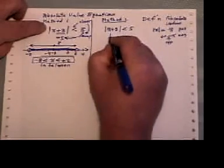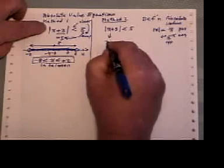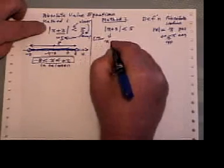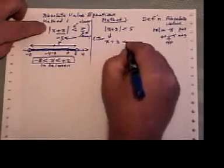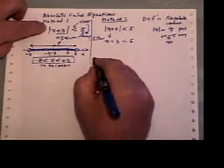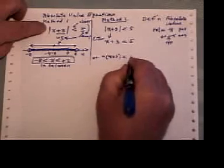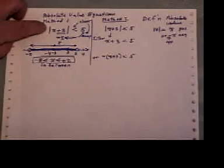Okay, so what I'm going to do is take the left-hand side and say either x plus 3 is less than 5 or the opposite of x plus 3 is less than 5. And that gives me two little equations to work out.